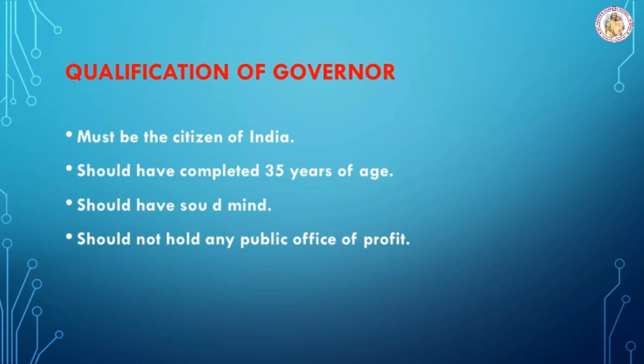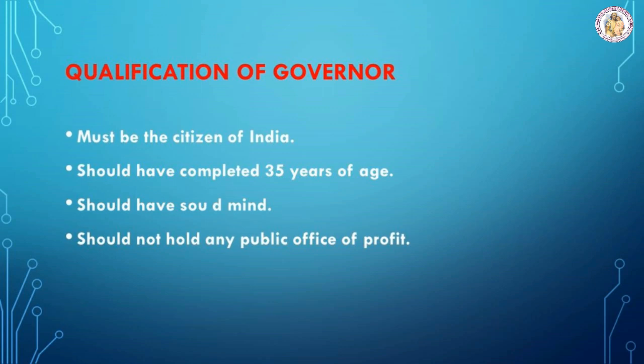Anyone can be the governor if they possess the following qualifications: they should be a citizen of India, should have completed 35 years of age, should have a sound mind, and should not hold any public office of profit. To become a chief minister, one should have completed 25 years of age and should be an MLA, or in the case of an MLC, should have completed 30 years of age.